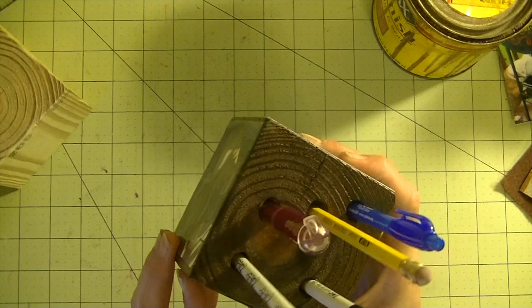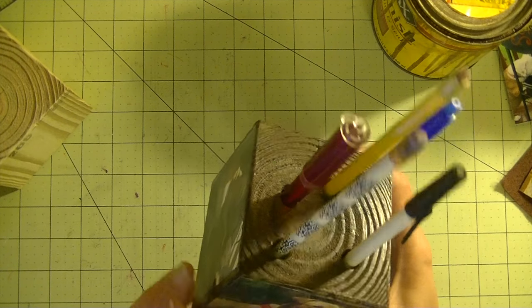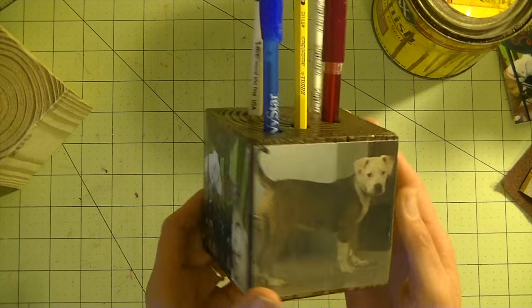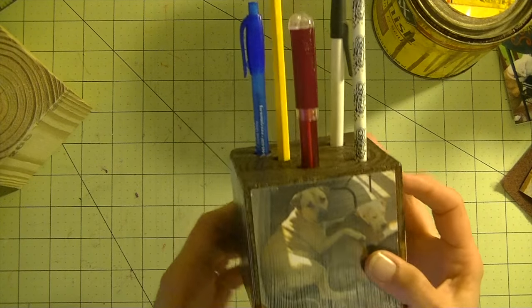Alright, so on my box here, you can see on the top, I have a few holes where pens and pencils are poking out. On the sides I did photos. I have one here of Harley, Harley and Dinah together, just Dinah, and then Harley and Dinah.